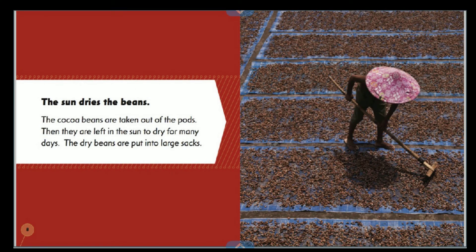The sun dries the beans. The cocoa beans are taken out of the pods, then they are left in the sun to dry for many days. The dry beans are put into large sacks.